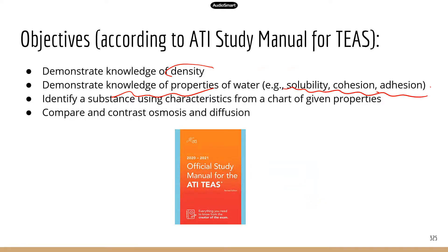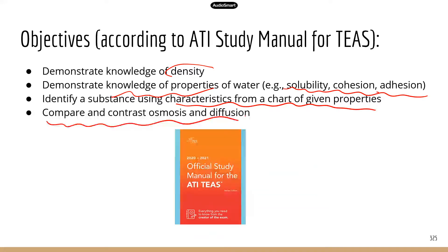Next, you should be able to identify a substance using characteristics from a chart of given properties. Basically, this may give you a table with numbers for different physical and chemical properties, and you need to be able to use that information to identify an unknown substance. Lastly, you can compare and contrast osmosis and diffusion. Osmosis is the movement of water molecules, and diffusion is a more broad type of molecular movement where molecules can move from a high concentration area to a lower concentration area. So osmosis is a special type of diffusion — it's diffusion of water molecules.